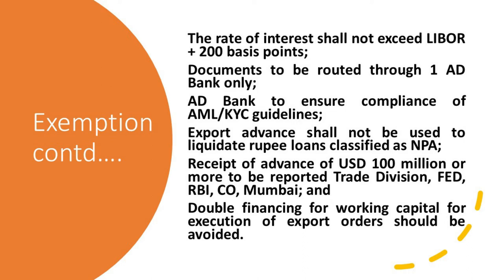Export advance shall not be used to liquidate rupee loans classified as NPA (non-performing assets). If a company has any rupee loan already classified as NPA, then the export advance should not be used to write off that loan. Receipt of advance of USD 100 million or more must be reported to the Trade Division, FED, RBI, Central Office, Mumbai. When a company receives USD 100 million as export advance, it must be reported to RBI's Trade Division Central Office in Mumbai.